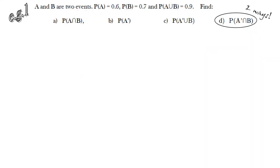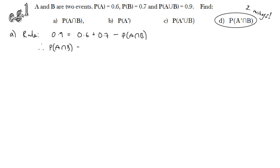Let's have a look at how we can use that rule. We have an example where we know the probability of A and B, the two events happening, and we know the union. Part a asks for the intersection of A and B. Write down the rule, substitute in the known values. The only thing we don't know is the probability of the intersection of A and B. A little rearranging — add that over and subtract 0.9 — and we get that the probability of the intersection of A and B is 0.4.